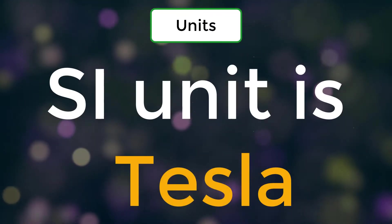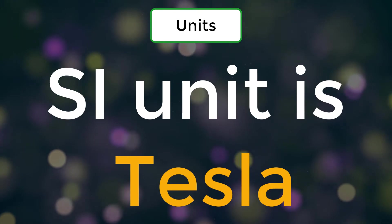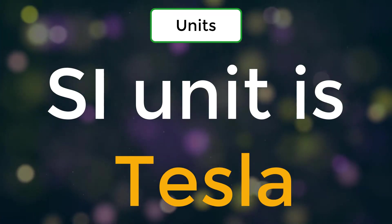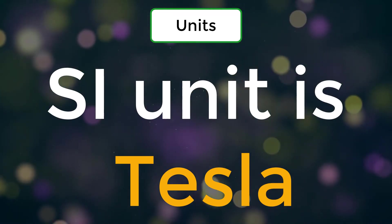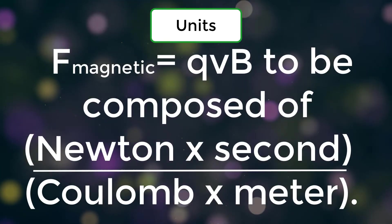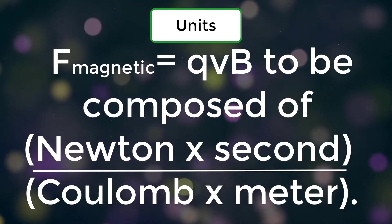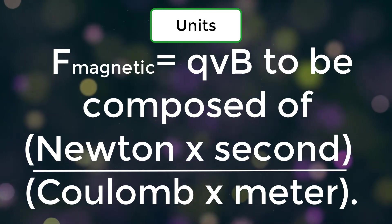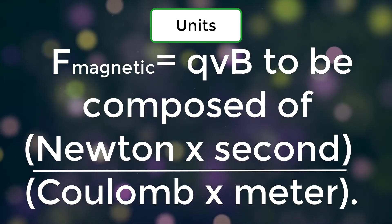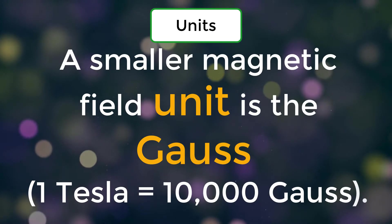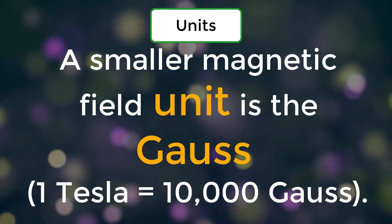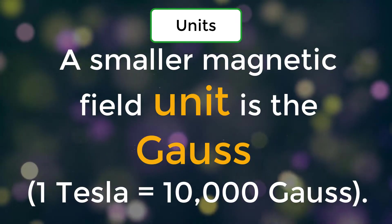Units: The standard SI unit of magnetic field is the Tesla, which can be seen from the magnetic part of the Lorentz force law — equal to QVB — to be composed of Newton times second per coulomb times meter. A smaller magnetic field unit is the Gauss. One Tesla is equal to 10,000 Gauss.